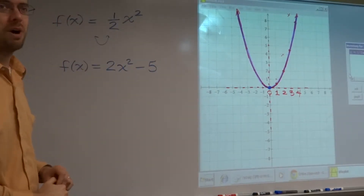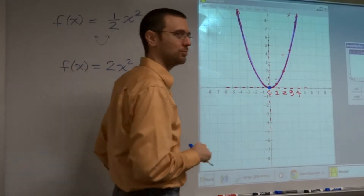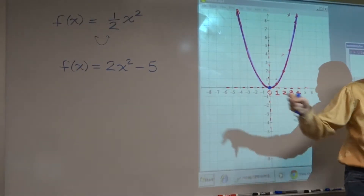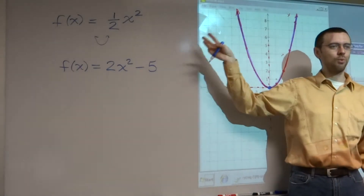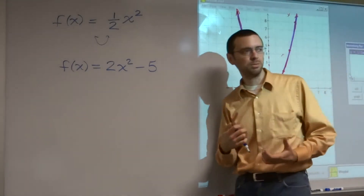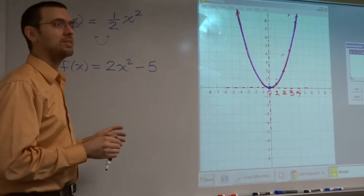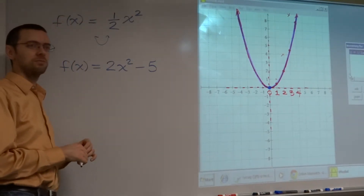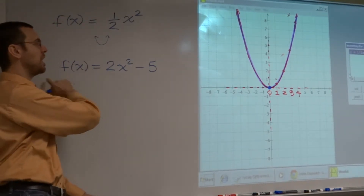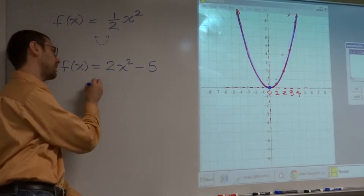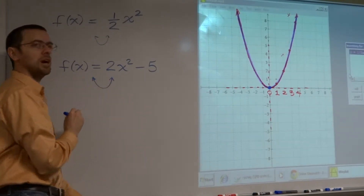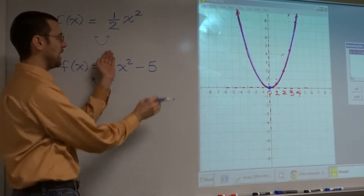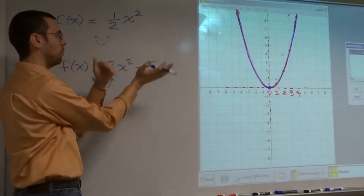Let's look at 2x squared minus 5. I'm going to throw in a couple of things — see if you guys can interpret what you see here and figure out what needs to be done. But before we can apply anything, you have to know the shape. What's my shape for this function? Parabola. It's a parabola. Now, what have you done to the parabola? Because a normal parabola would just be x squared.